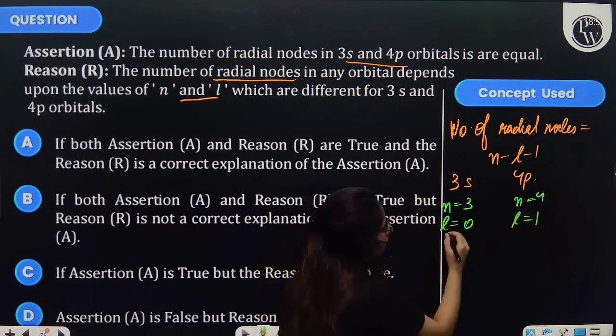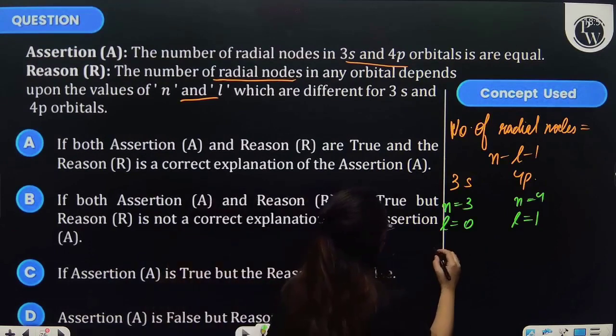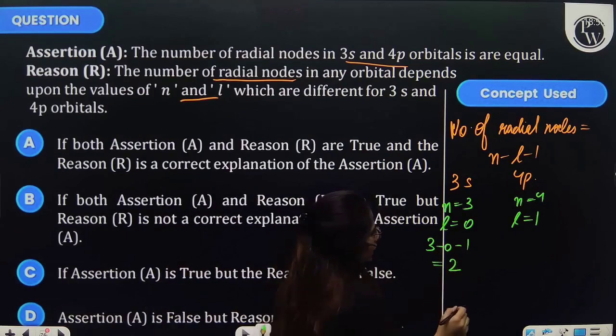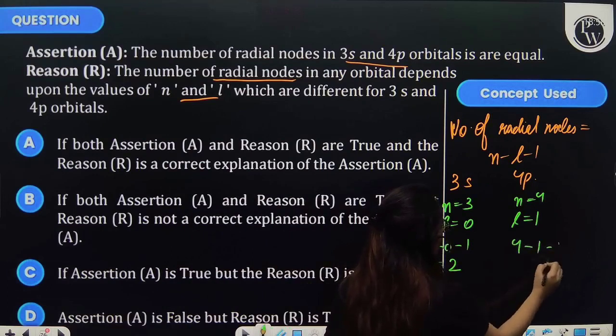And so radial nodes will be n minus l minus 1, that is 2. And then here it will be 4 minus 1 minus 1, that is 2.